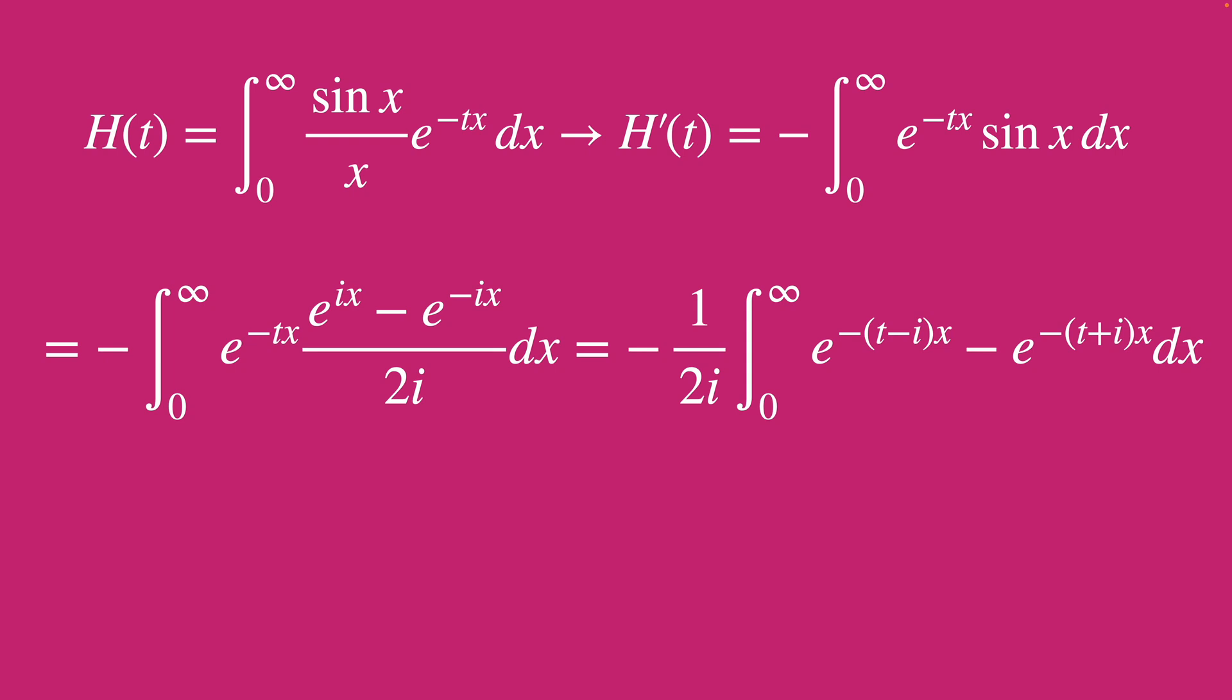And now, wait a minute, we can just use the OG formula for the integral of e to the negative ax from 0 to infinity, which after algebra gives us our right-hand side. And now we're almost done, right?